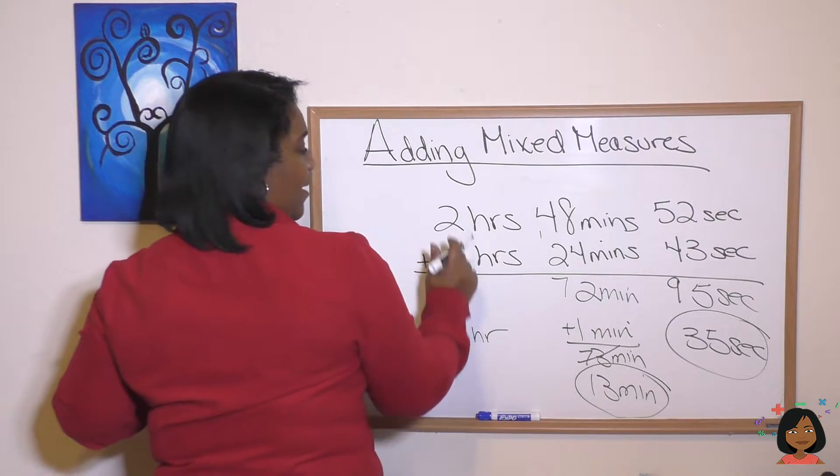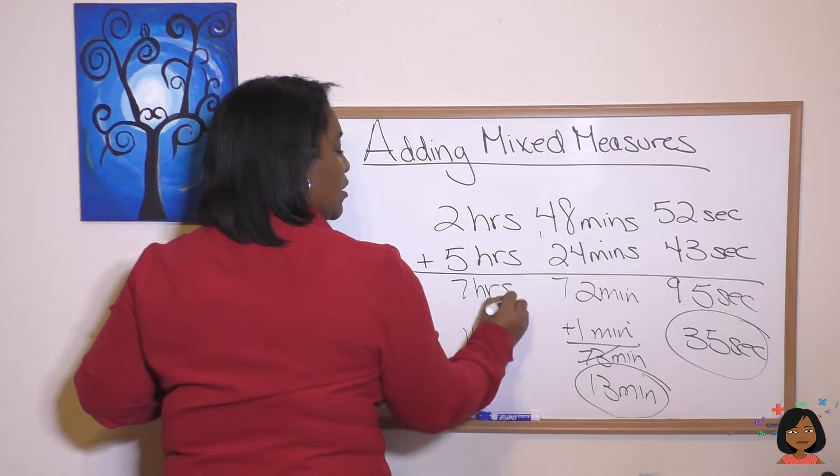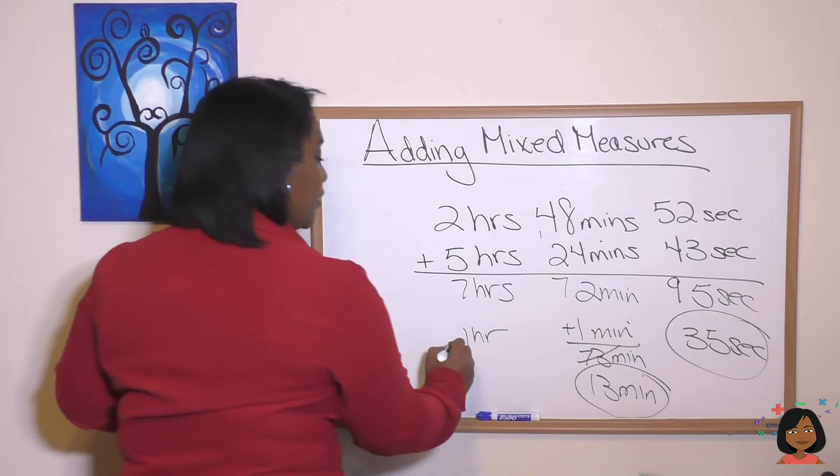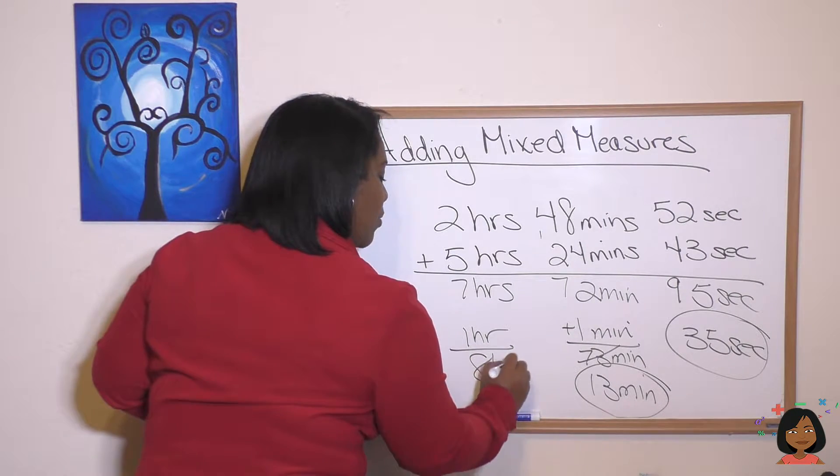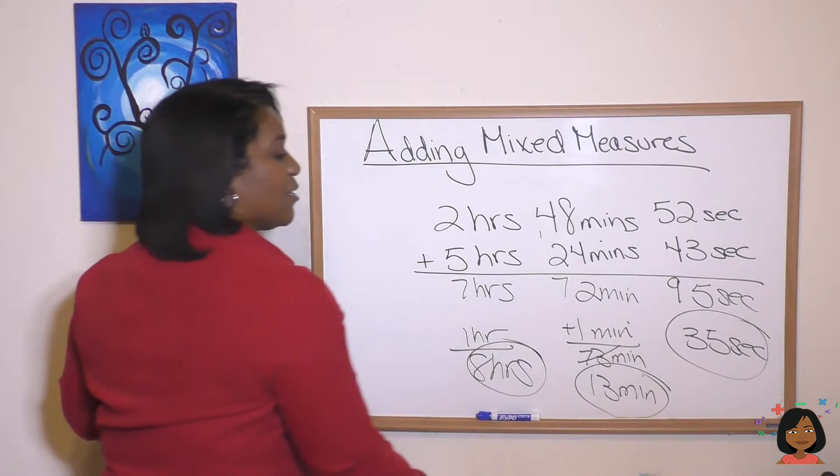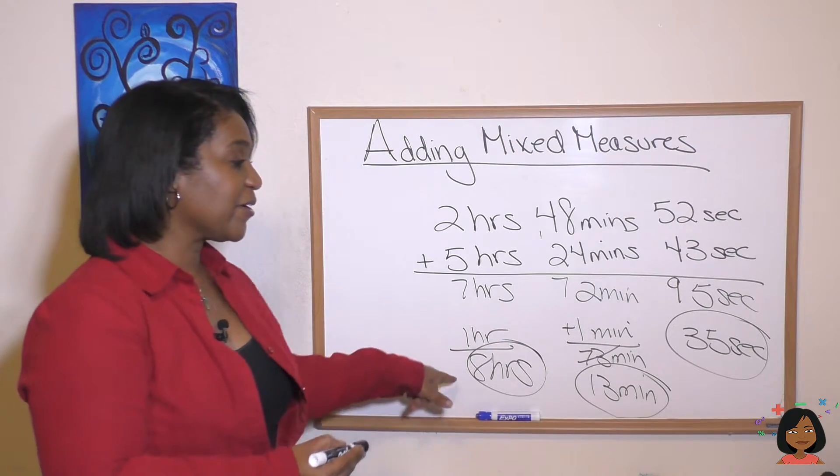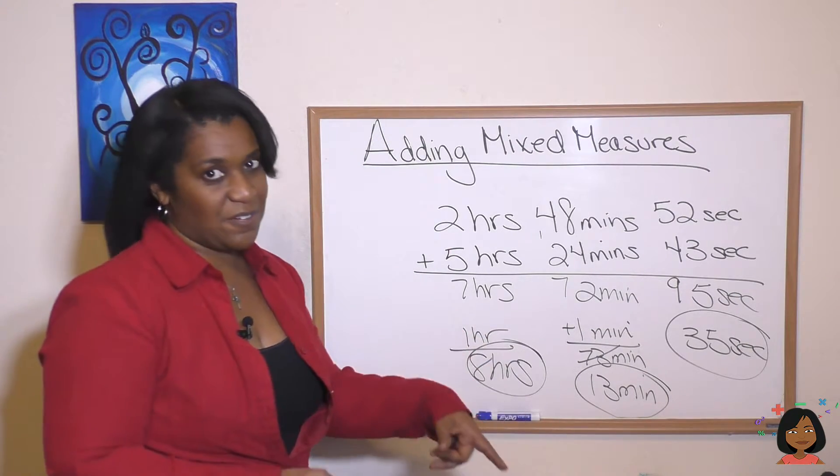Here we go. Five and two is seven hours, plus the one we brought over. That gives me eight hours. I'm circling it. What do we have left? Eight hours, 13 minutes, and 35 seconds.